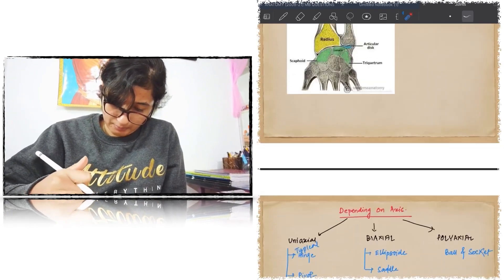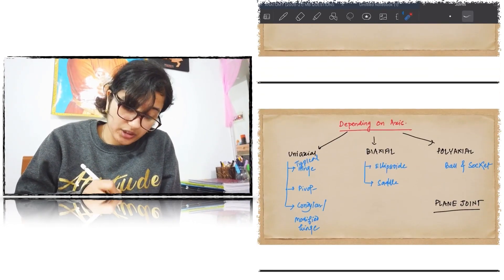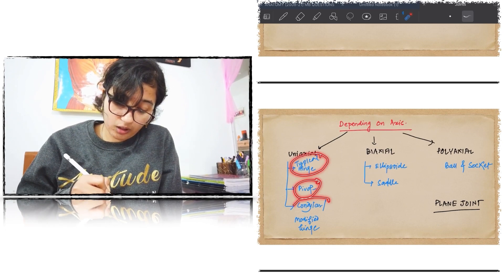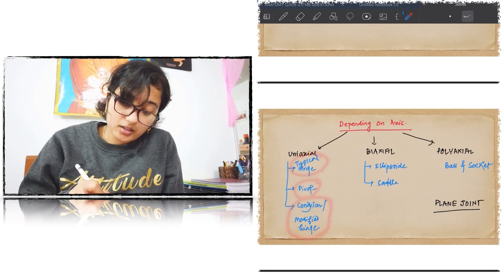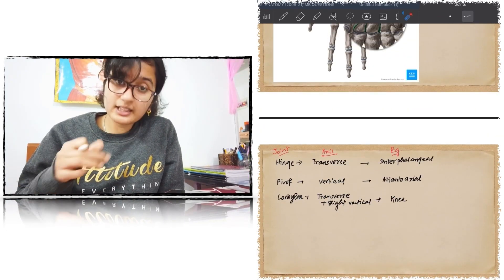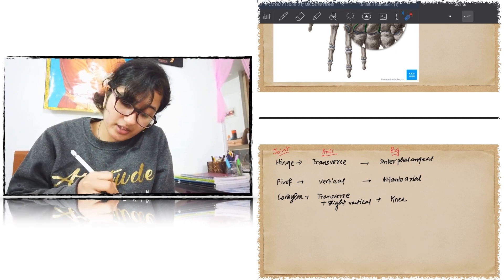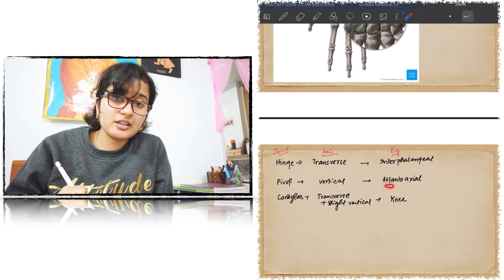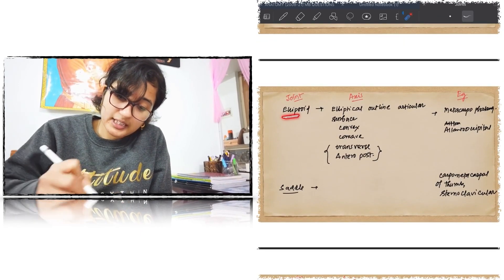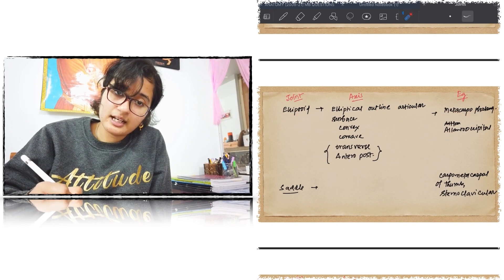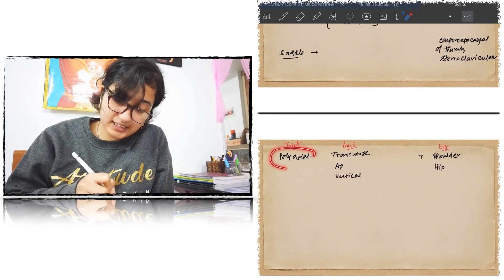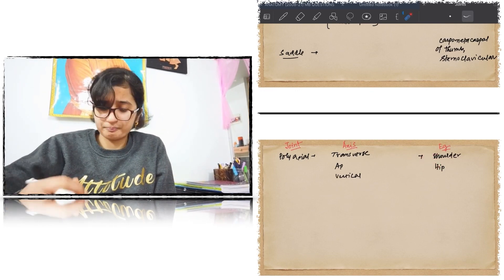Based on axes of movement, synovial joints are divided into uniaxial, biaxial, and polyaxial. Uniaxial joints include hinge joints (example: interphalangeal joint), pivot joints (example: atlanto-axial or superior radio-ulnar joint), and condylar joints (example: knee joint). Biaxial joints include ellipsoid joints (example: metacarpophalangeal joint and atlanto-occipital joint) and saddle joints (example: carpometacarpal joint of the thumb and sternoclavicular joint). Polyaxial joints are ball and socket joints — examples: shoulder joint and hip joint.